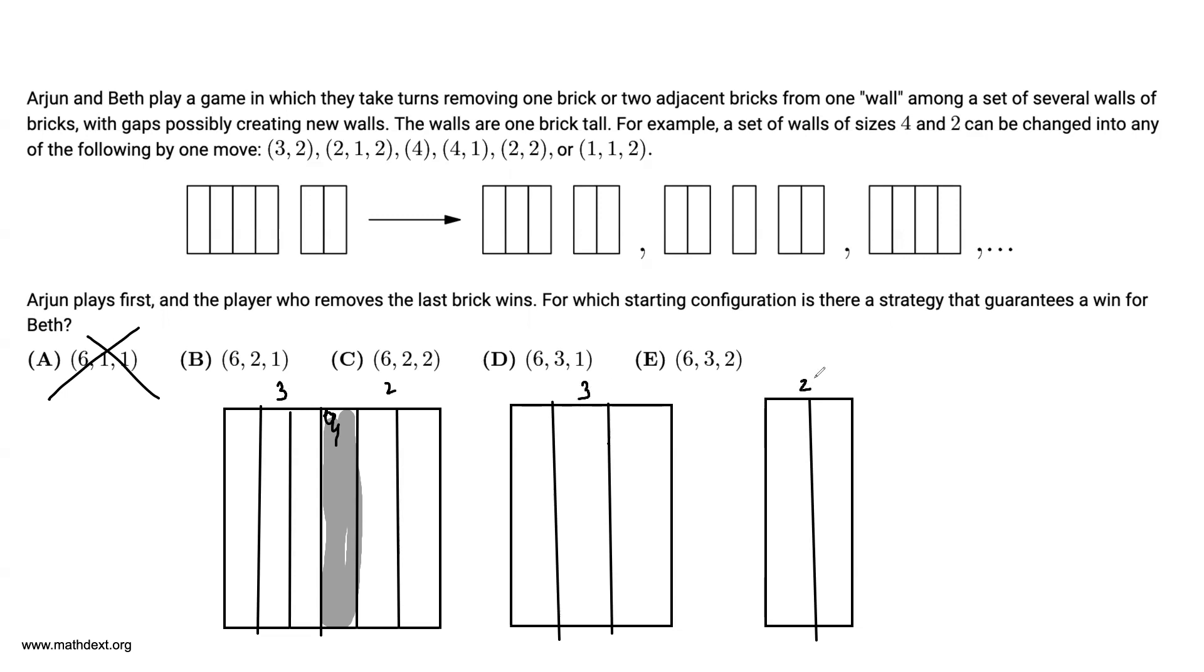And this is bad for Beth, because you see, this is entirely symmetrical. There are two 3s and two 2s, which means that whatever Beth does, Arjun can copycat him. So that essentially guarantees the winning strategy for Arjun, for E.